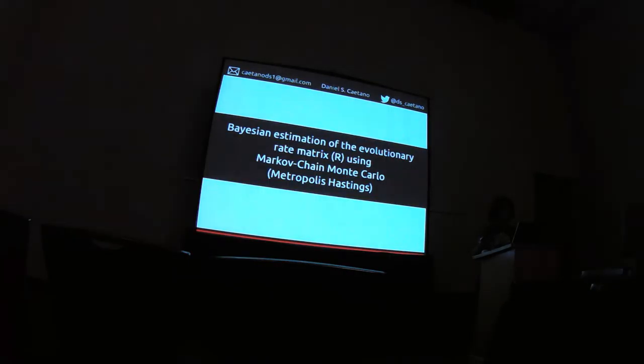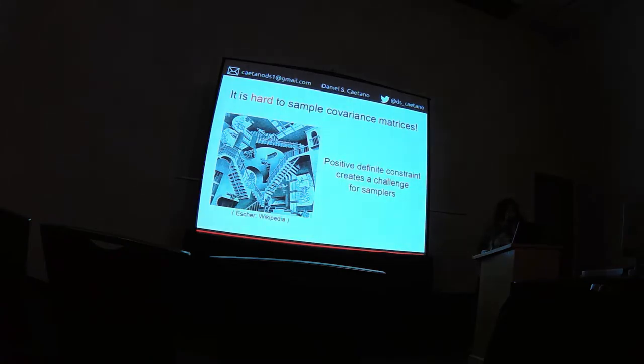So that's why I am here, and I am going to show to you today the Bayesian estimation of this evolutionary rate matrix using MCMC. So the first problem is that it is very hard to sample covariance matrix. So covariance matrix is in this weird multivariate space with balls that we cannot traverse, we cannot load very well, and they all need to be positive definite.